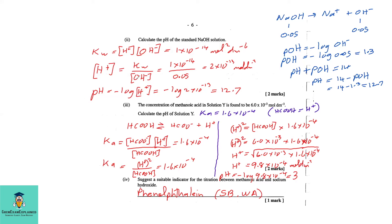Alternatively, using pOH: pOH = −log(0.05) = 1.3. Then using pH + pOH = 14, pH = 14 − 1.3 = 12.7. You can use either method to arrive at the same answer.